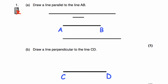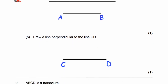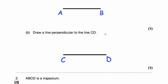Question one B: we've been asked to draw a line that's perpendicular to the line CD. Perpendicular means to cross it at a right angle — the angle between the line we're going to draw and the line CD needs to be 90 degrees. As you can see, it crosses the line at 90 degrees, so this line and the line CD are perpendicular. They meet or cross at 90 degrees.